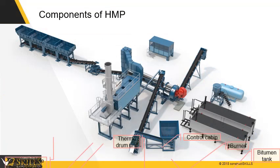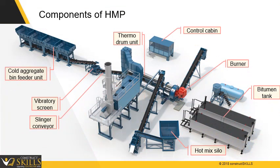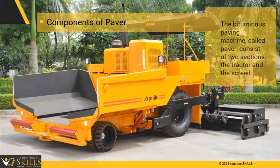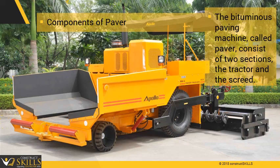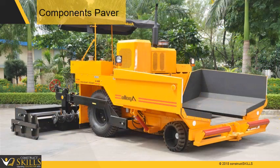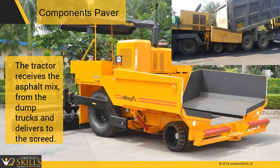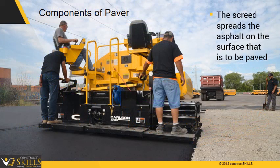These are some components of a hot mix plant. The bituminous paving machine, called a paver, consists of two sections: the tractor and the screed. The tractor receives the asphalt mix from the dump trucks and then delivers it to the screed. The screed spreads the asphalt on the surface that is to be paved.